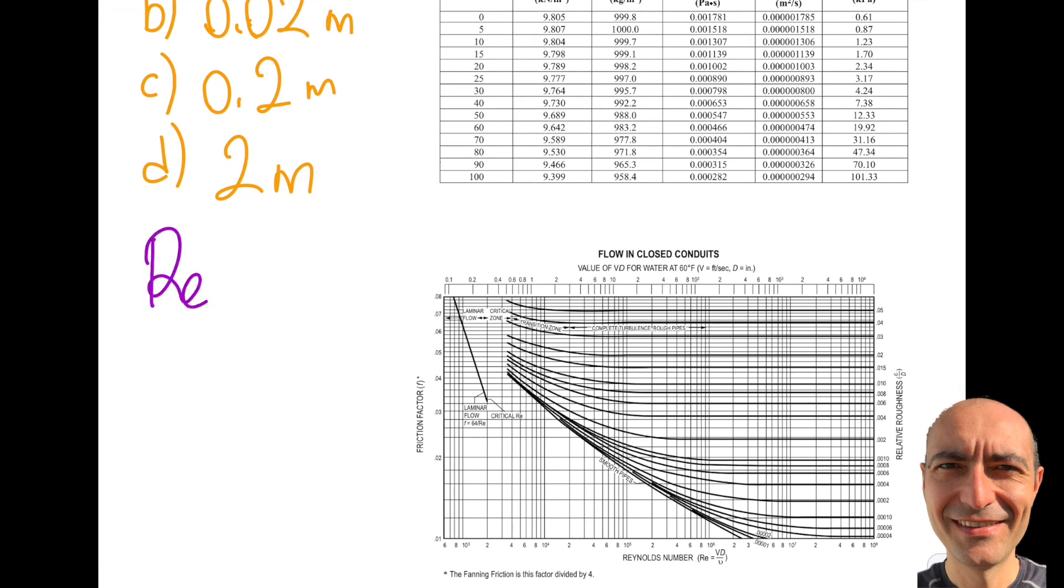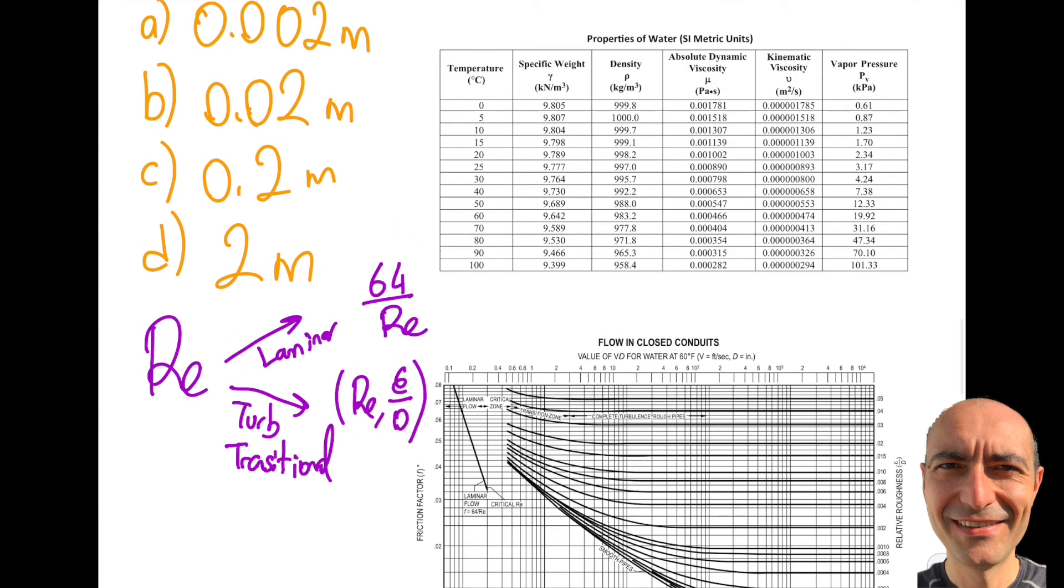The very first thing that you will do in these kinds of questions is calculate the Reynolds number. Depending on the direction of the Reynolds number, if this is laminar, then I will simply go ahead and insert 64 over Reynolds as my Darcy friction factor. And if it is not laminar, which means it's either turbulent or transitional, I will get myself a function that I need to look from this particular graph that you see. So it will be a function of Reynolds number and also epsilon over D. So here is where it is handy to put a link to the previous video where I calculated the Reynolds number, but I also replicated it over here.